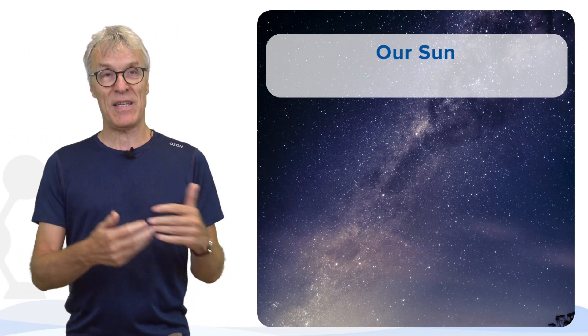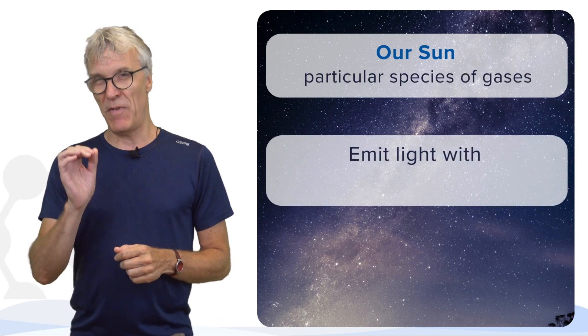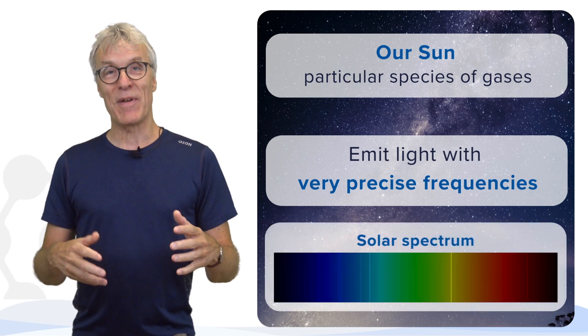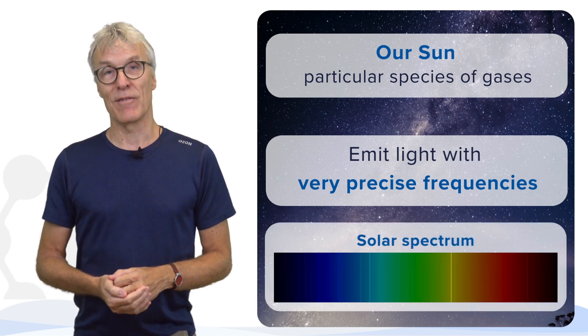The colors of light you find from the stars, for example. And we know today that stars, our own sun, consist of particular species. And these species emit light with very precise frequencies, and we also know why. Because the quantum theory explains why we have these particular frequencies of light.